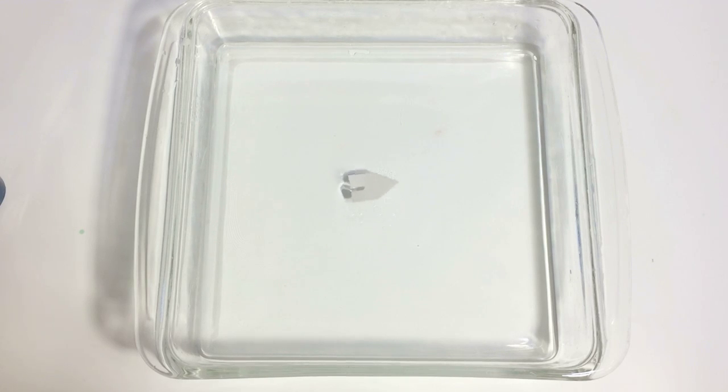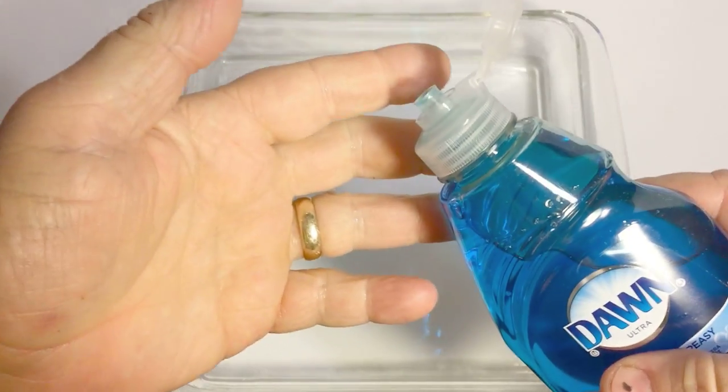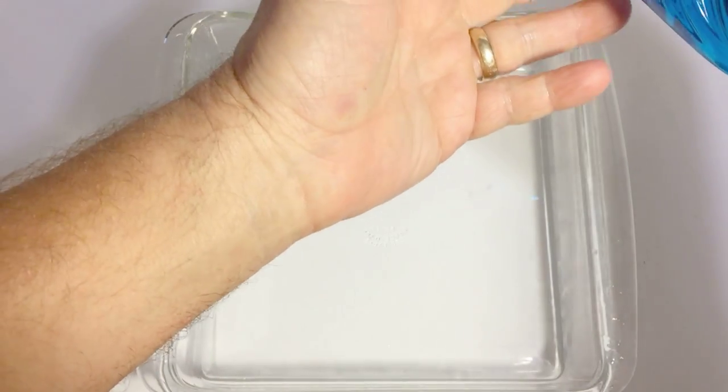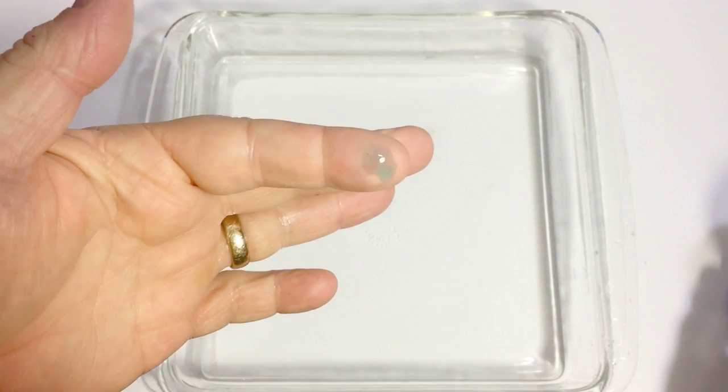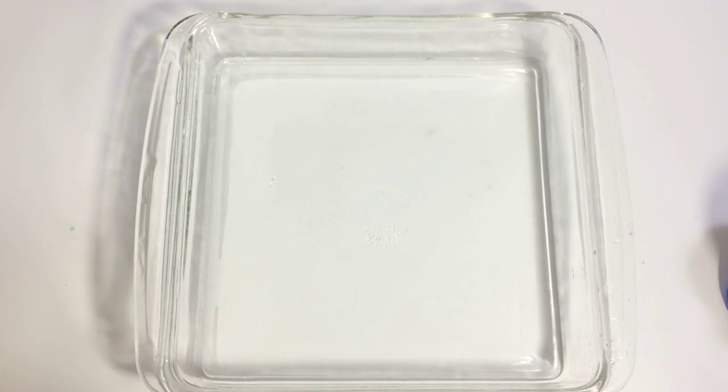And the third and last principle is the Marangoni effect, which is acting upon the boat. This effect describes how the liquid in the high surface tension pulls more strongly on the surrounding liquid than the liquid with the low surface tension.